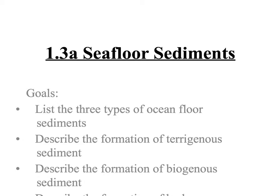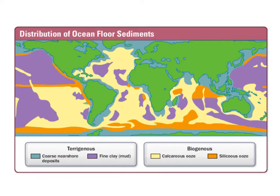Aloha and welcome to our video on seafloor sediments. In this video we will list the three types of ocean floor sediments, then we'll describe the formation of all three: terrigenous, biogenous, and hydrogenous sediments. So let's talk a little bit about ocean floor sediments — there are three different kinds. We can see two of them pictured here and we'll talk about the third one at the end.